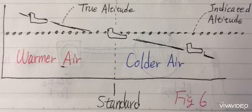True altitude decreases when you move from a warmer area to a colder area. When the temperature is 10 degrees Celsius colder than standard, true altitude is about 4% lower than indicated altitude.